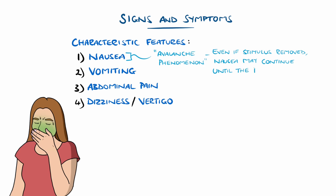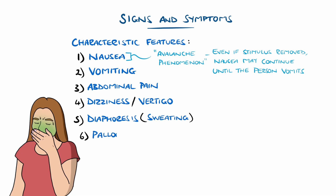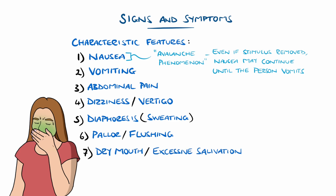There can also be autonomic disturbance, such as diaphoresis, meaning sweating, pallor or flushing, as well as dry mouth or even excessive salivation. In rare instances, prolonged vomiting may lead to dehydration, requiring fluid resuscitation.